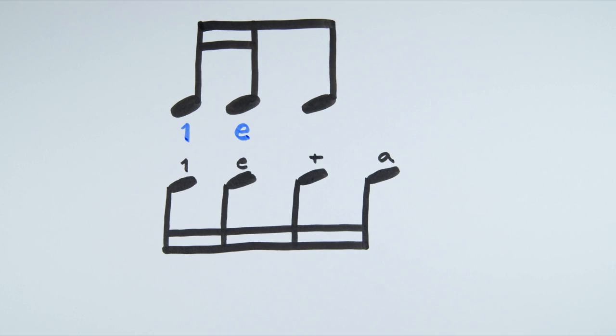The next note is an eighth note, and the next syllable is AND, so it will also be AND. Since we know eighth notes take up the space of two sixteenths, there will be no A in this case because it is being taken up by the eighth note.